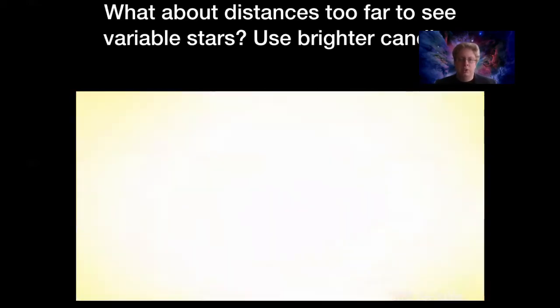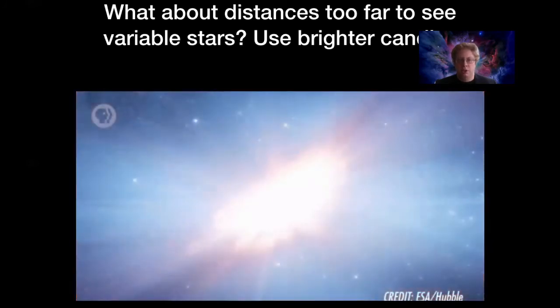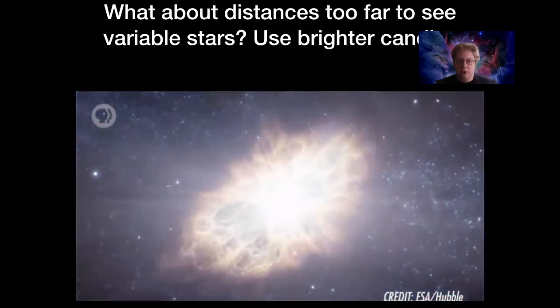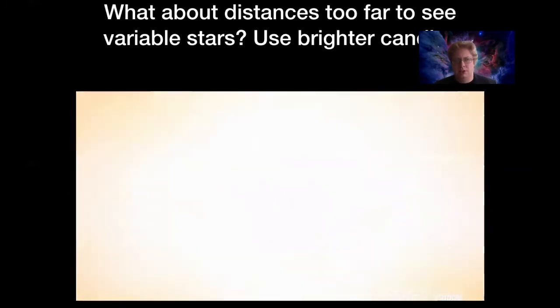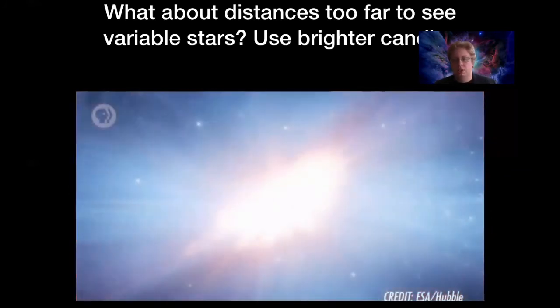So when you have something like this, you can then use those measurements to figure out just how bright that variable star is, and you can use that to figure out how far away it is by seeing how bright it appears in your telescope and comparing that to how bright you know it to be. You can then use that to figure out how far away it must be in order to appear that faint.